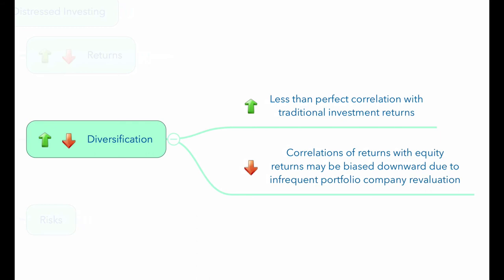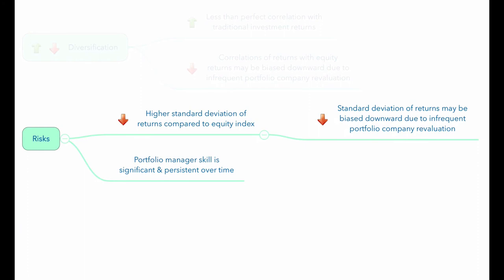It's useful to note that because portfolio companies are revalued infrequently, the correlations of returns with equity returns may be biased downward. From a risk standpoint, the standard deviation of private equity returns has been higher than the standard deviation of equity index returns, implying greater risk. Because portfolio companies are not frequently revalued, this standard deviation of returns may also have a downward bias. Evidence also suggests that choosing skilled fund managers is important, as there is a statistically significant relationship between fund manager skill and fund returns, and this relationship persists over time.